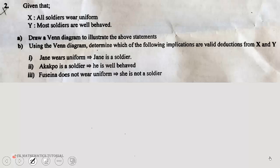Statement Y is 'most soldiers are well behaved.' Part (a): draw a Venn diagram to illustrate the above statements. Part (b): using the Venn diagram, determine which of the following implications are valid deductions from X and Y. The implications are: (i) Jane wears uniform implies that Jane is a soldier; (ii) Acouple is a soldier implies that he is well behaved; (iii) Fusina does not wear uniform implies that she is not a soldier.